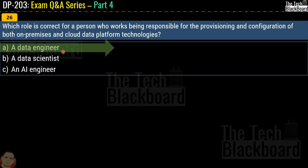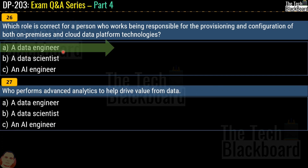Now let's look at the data scientist. Question number 27 says: who performs advanced analytics to help drive value from the data? Your options are a data engineer, a data scientist, or an AI engineer. The correct answer is option B, a data scientist.